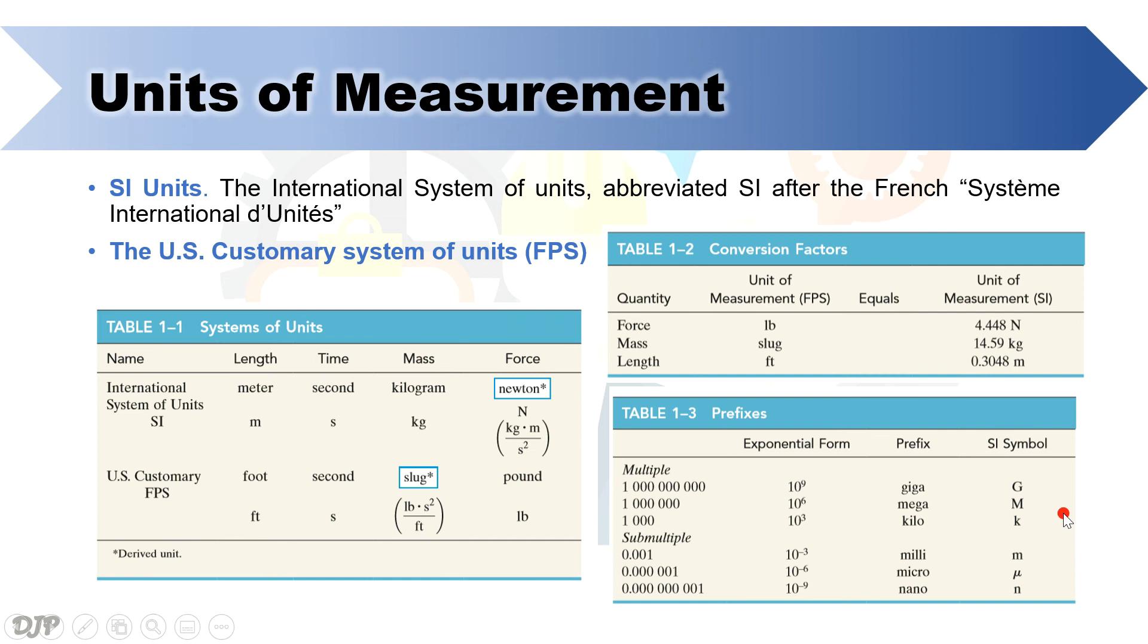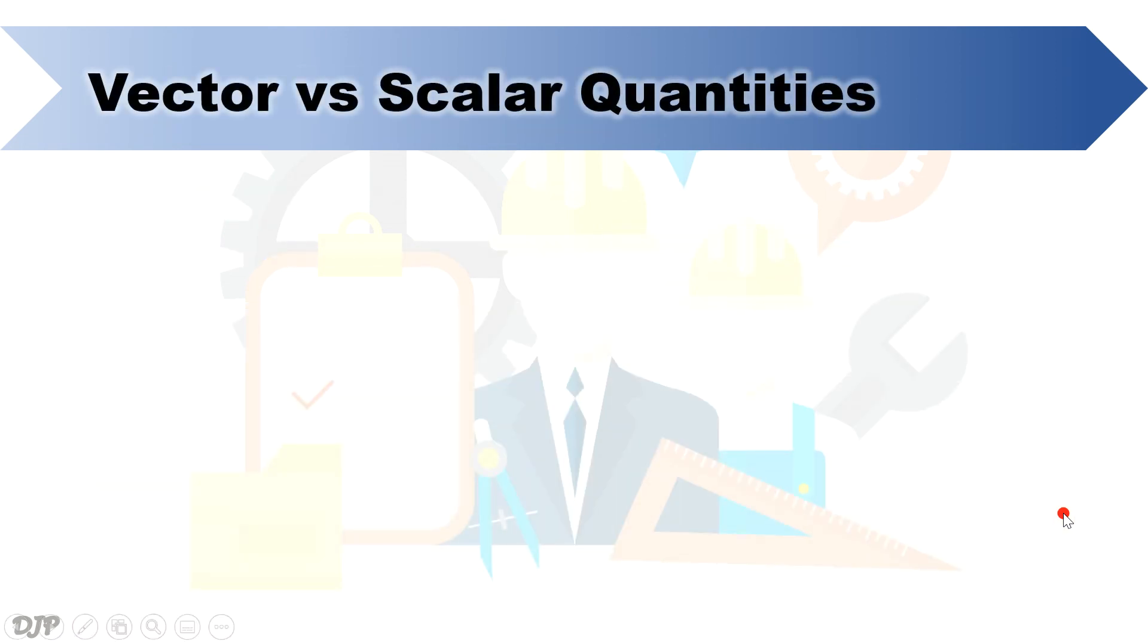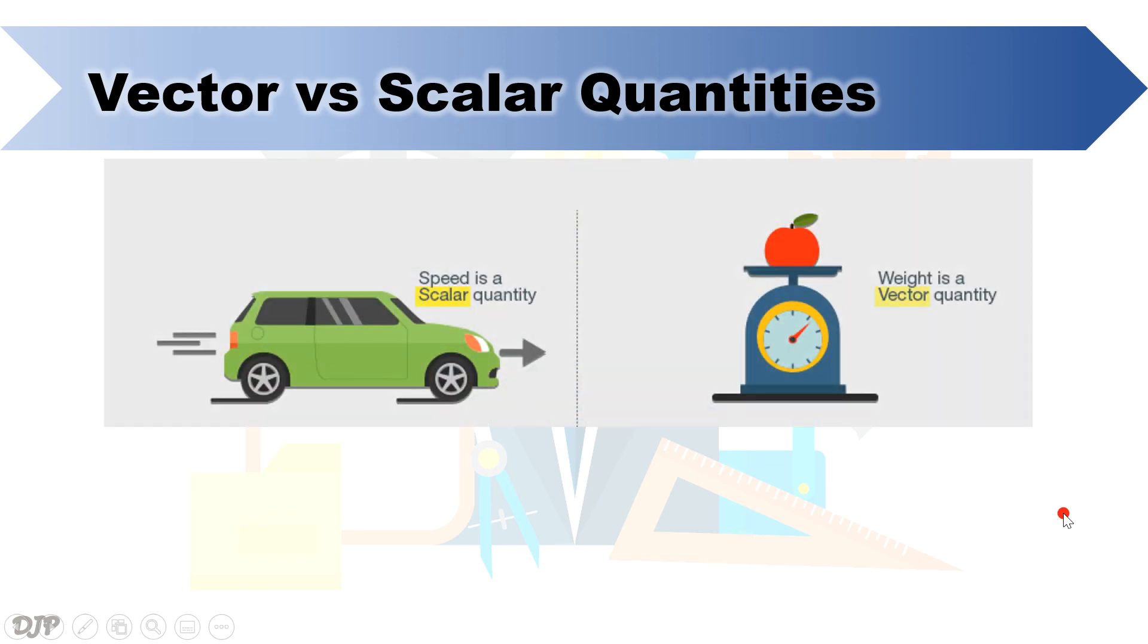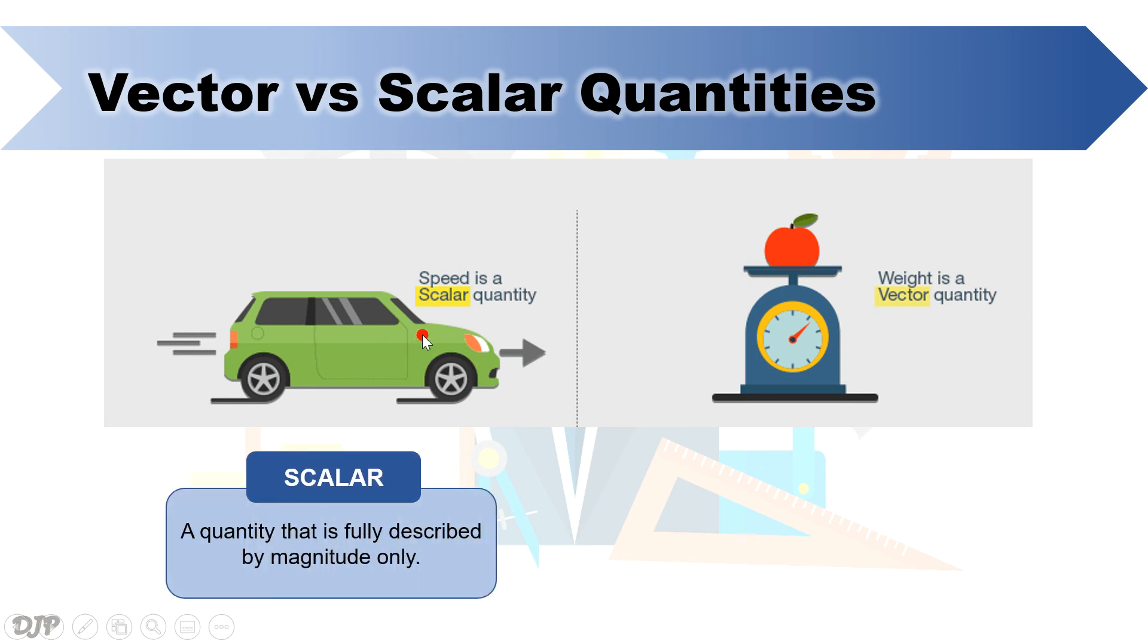The final thing that we will review before we end the discussion is vector and scalar quantities. To differentiate them, let's consider the following figure. As you can see in the right, speed is a scalar quantity. A scalar quantity is described only by magnitude, while the weight of the apple is a vector quantity since it has both magnitude, which is indicated by the scale, and direction, which is downward for all gravitational forces on Earth.